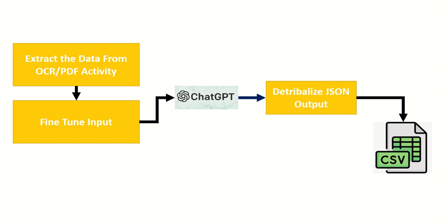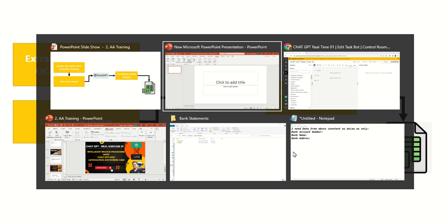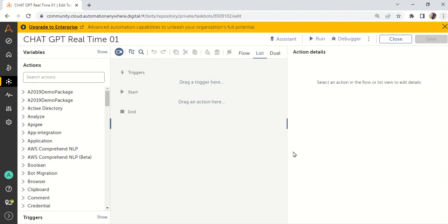Most people know how to connect ChatGPT via API, but we will see step by step which model to use. There are many models in ChatGPT — we will discuss which model is best for the IDP process. After getting the ChatGPT response, we have to deserialize the JSON output, and finally you will get the output in a CSV.